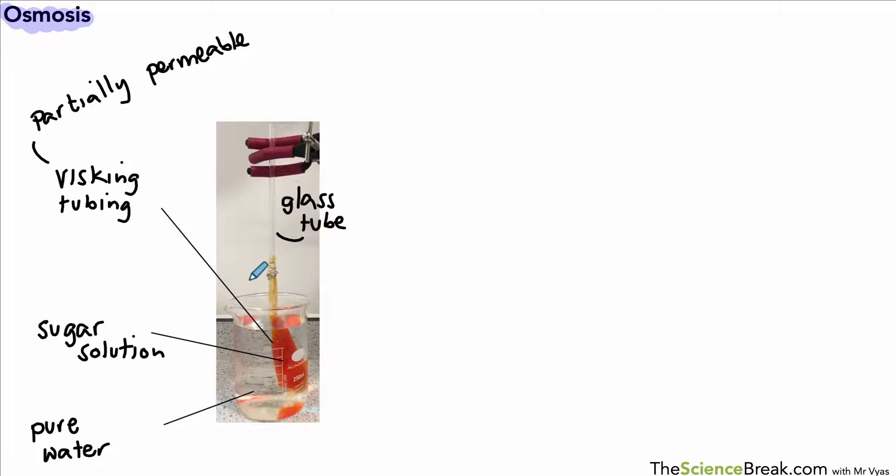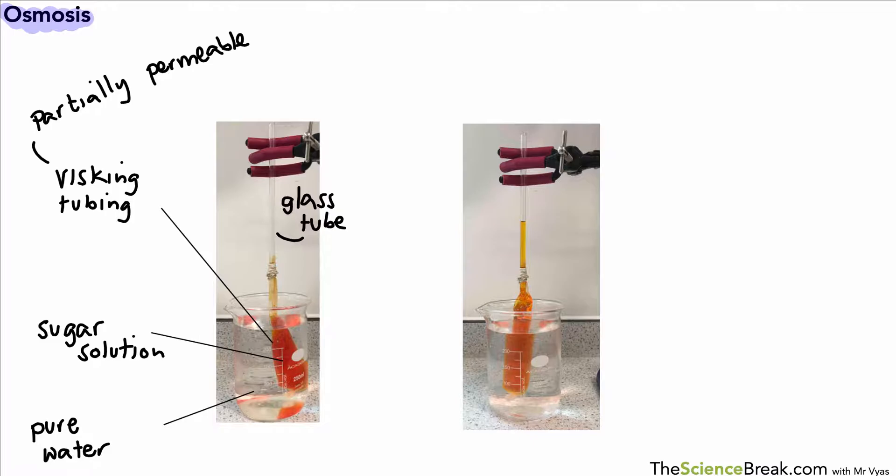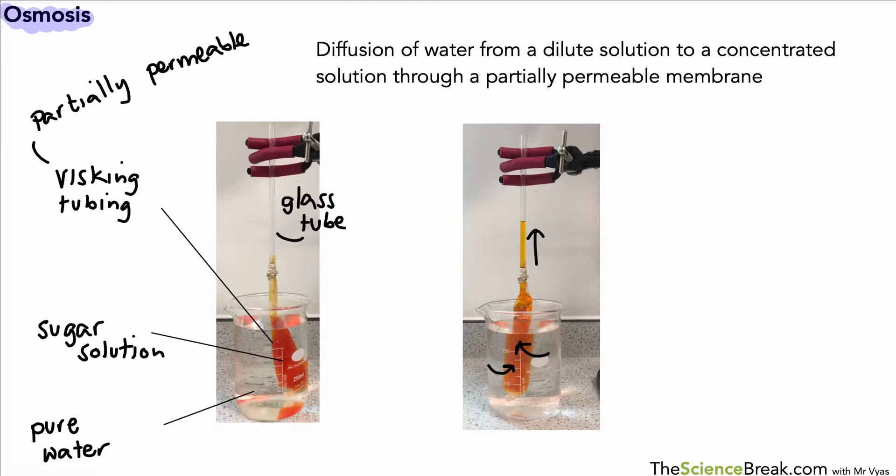We can leave this for a couple of hours and see what happens. And there we go. What we notice is that the visking tubing has swollen, and not only has it swollen, but the sugar solution has moved upwards up the glass tube. So why has this happened?